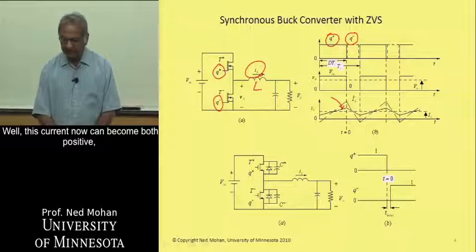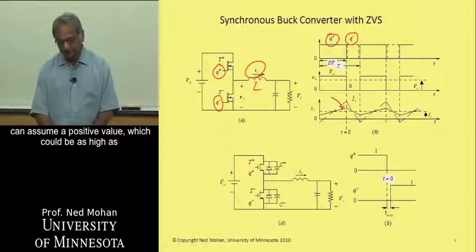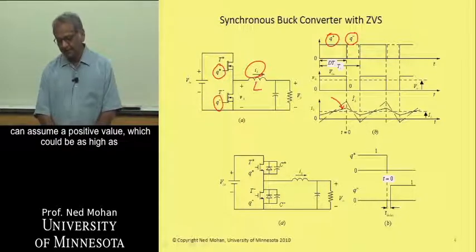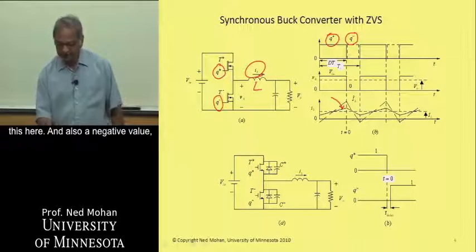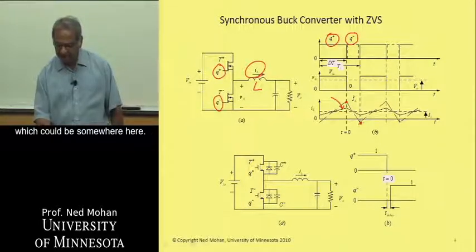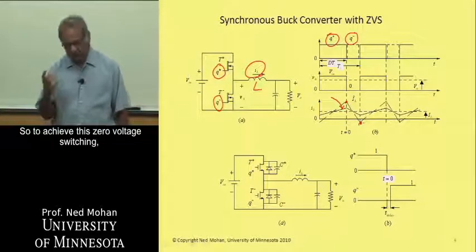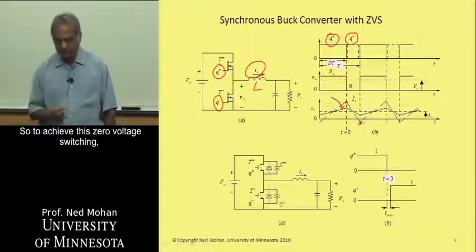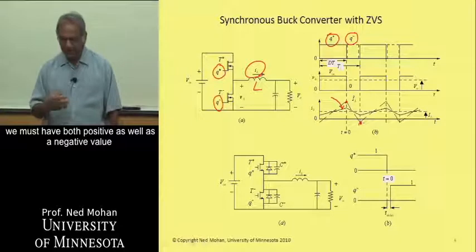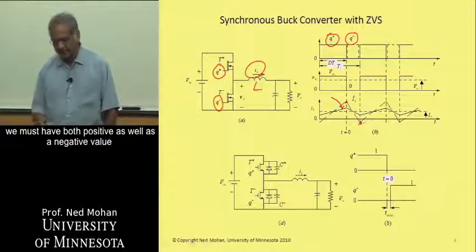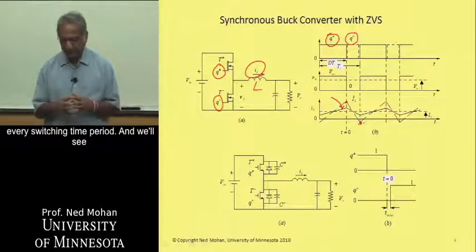This current now can become both positive, can assume a positive value, which could be as high as this one, and also a negative value, which could be somewhere here. So to achieve this zero-voltage switching, we must have both positive as well as a negative value every switching time period.